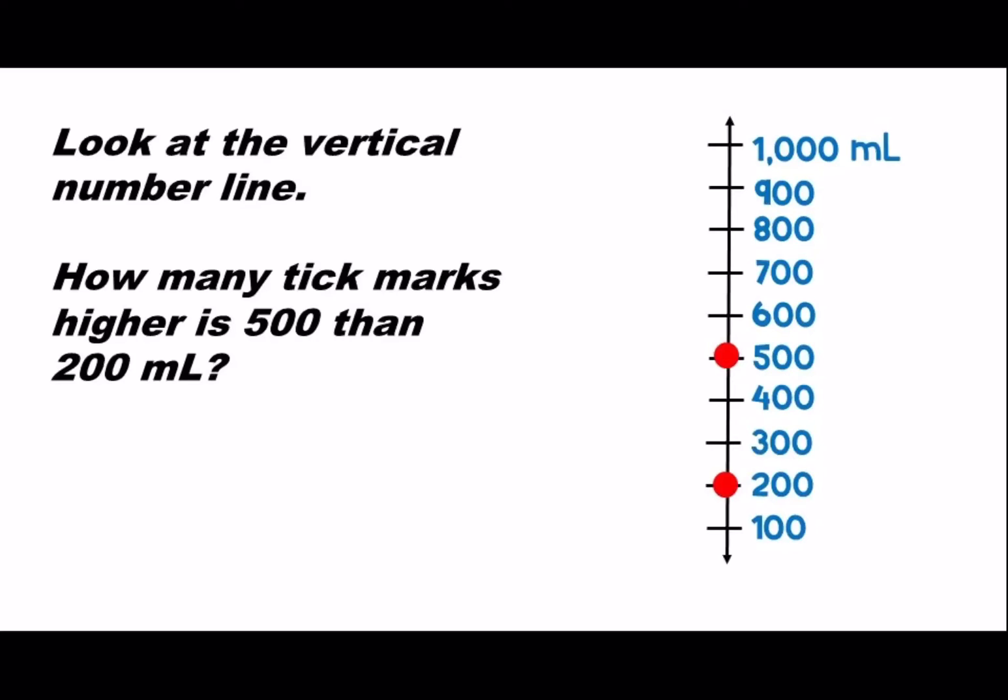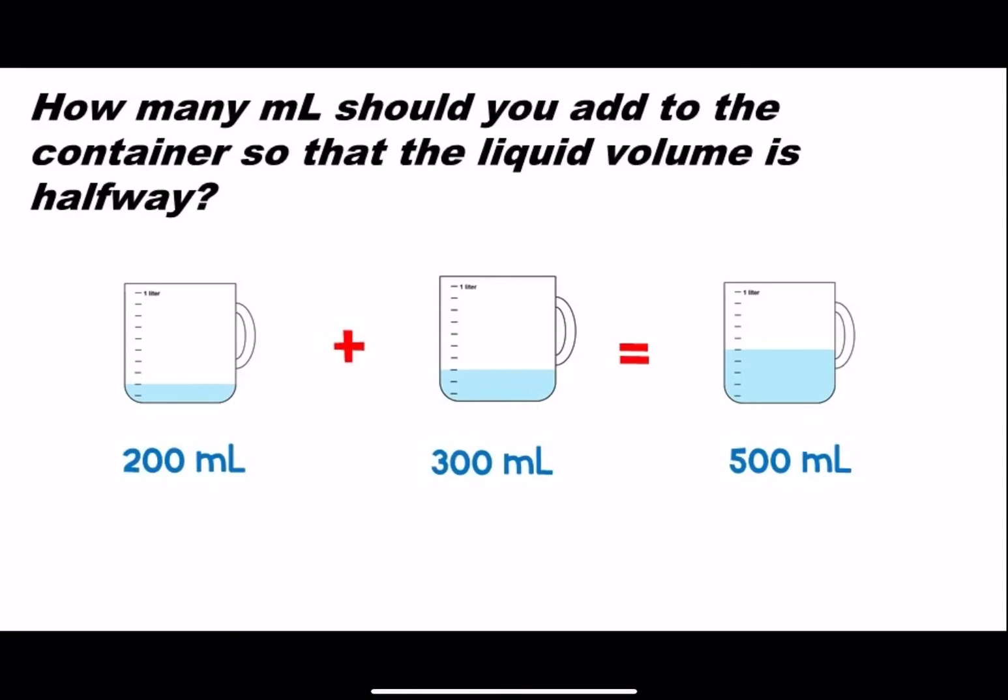We can count up from 200 to get up to 500 and find the answer. There's one, two, three tick marks in between 200 and 500. So we should add 300 milliliters to get to halfway. So if the container had 200 milliliters and we added 300 milliliters, we would have a total of 500 milliliters which is half of one liter.